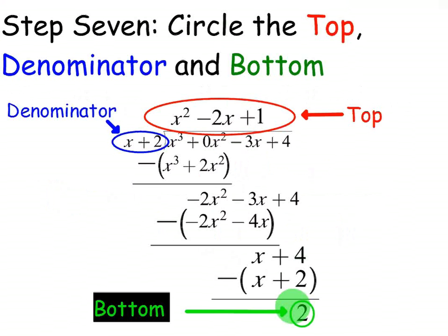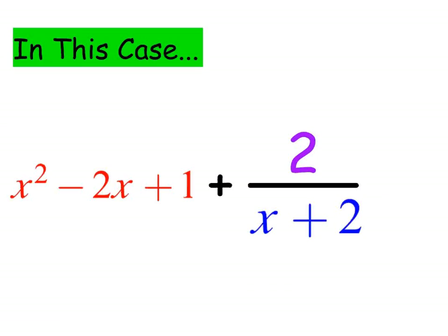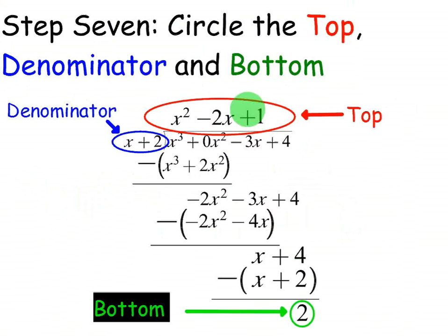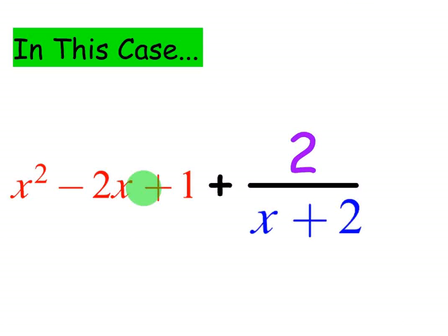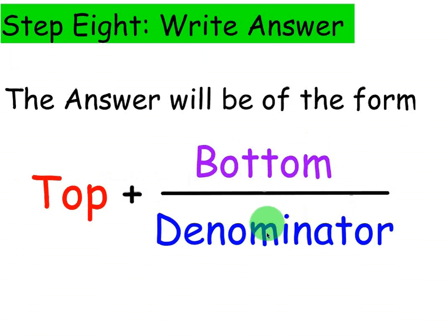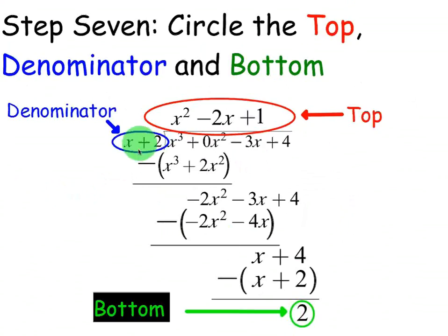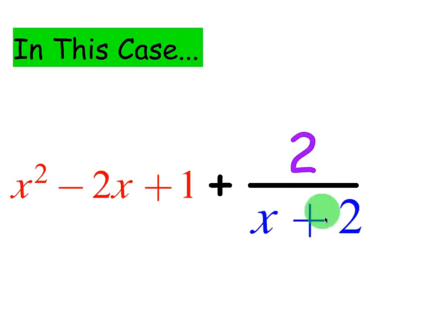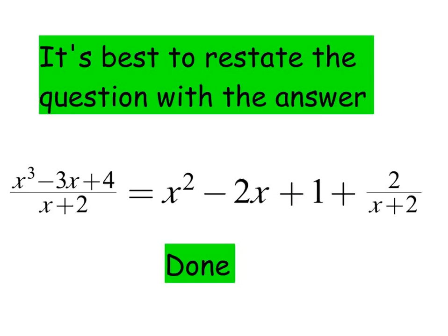The top was x squared minus 2x plus 1, the remainder was 2, and the original denominator was x plus 2. So the final answer is x squared minus 2x plus 1 plus 2 over x plus 2. The original problem was x cubed minus 3x plus 4 over x plus 2, and we're going to be using this technique to find slant asymptotes.